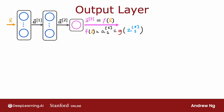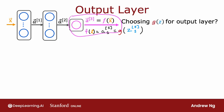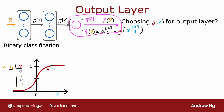You can choose different activation functions for different neurons in your neural network. When considering the activation function for the output layer, there'll often be one fairly natural choice depending on what the ground truth label Y is. Specifically, if you are working on a binary classification problem where Y is either 0 or 1, then the sigmoid activation function will almost always be the most natural choice, because the neural network learns to predict the probability that Y equals 1, just like logistic regression. So if you're working on a binary classification problem, use sigmoid at the output layer.